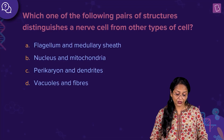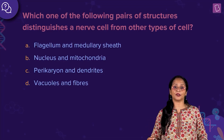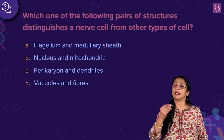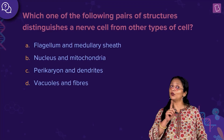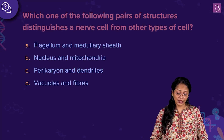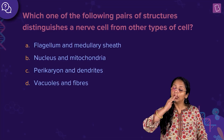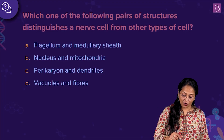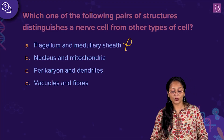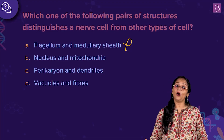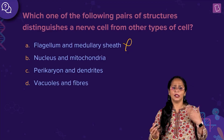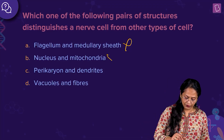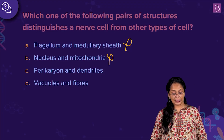Option A: flagellum and medullary sheath. Flagellum — the whip-like structure — you find it in bacteria for locomotion; you do not find it in a nerve cell. Medullary sheath, of course — there is a myelin sheath covering the nerve. So this is wrong. Option B: nucleus and mitochondria — these are organelles found in all eukaryotic cells; they do not distinguish the neuron from other cells, so this is wrong. Option C: pericaryon and dendrites.